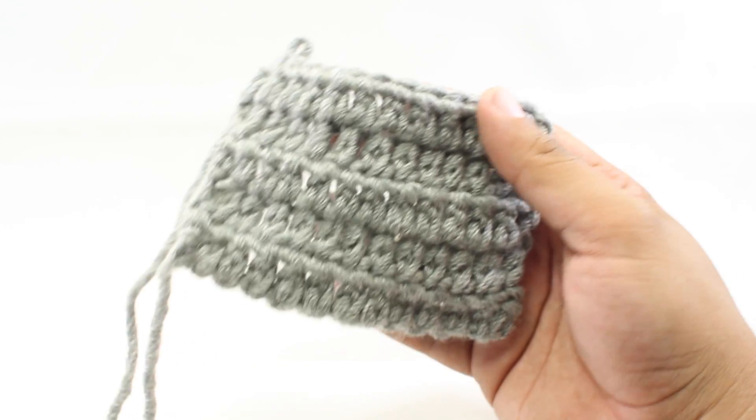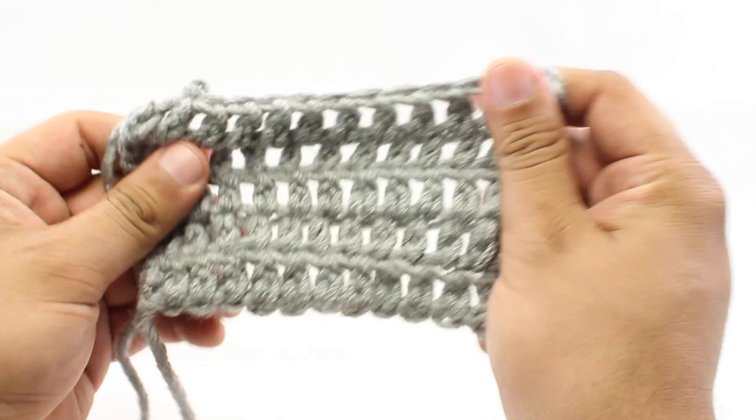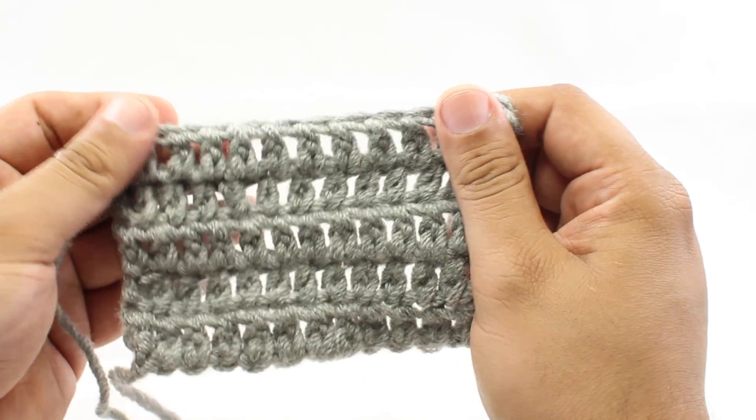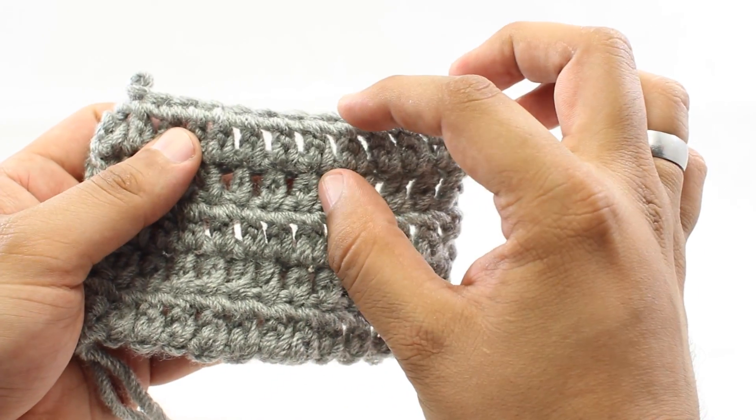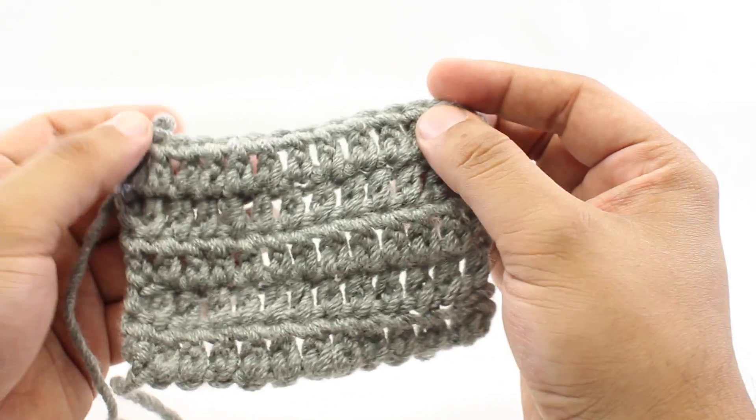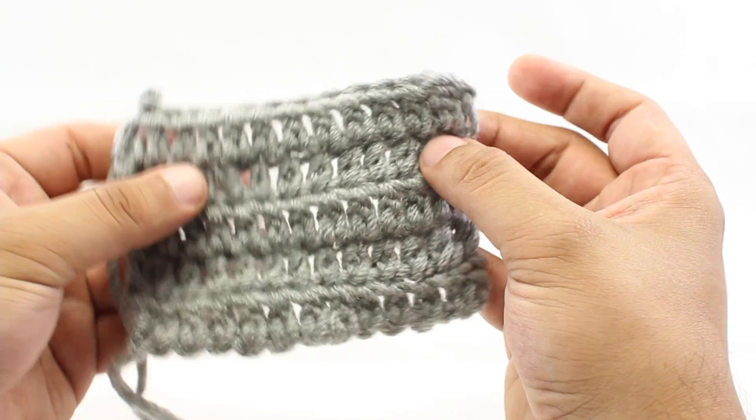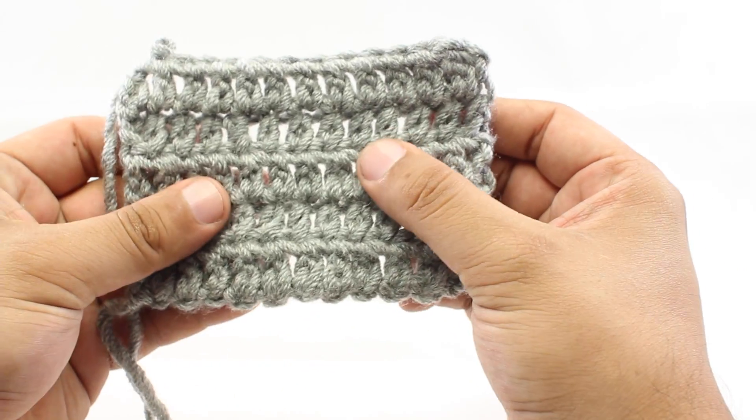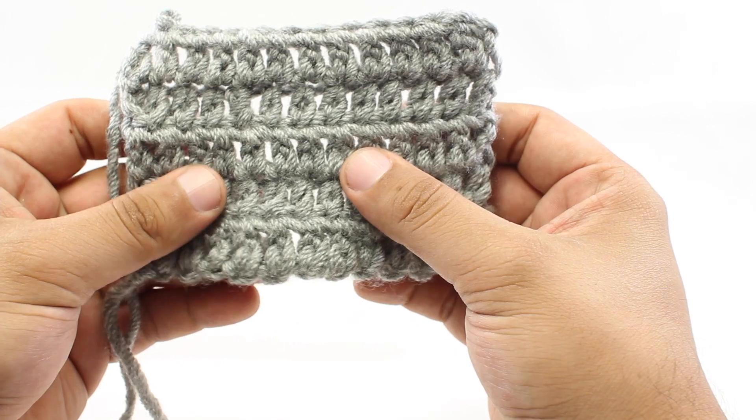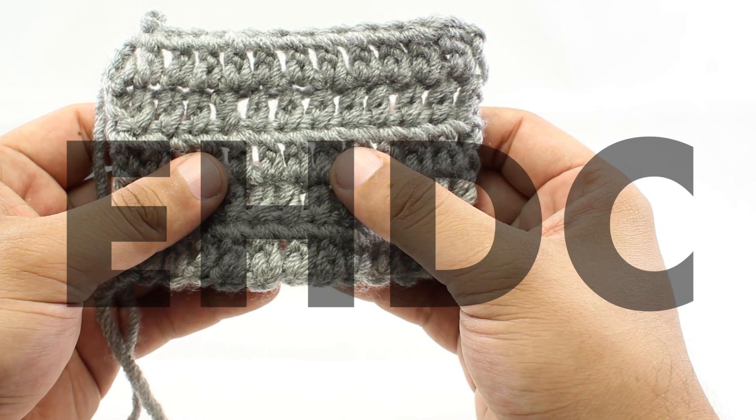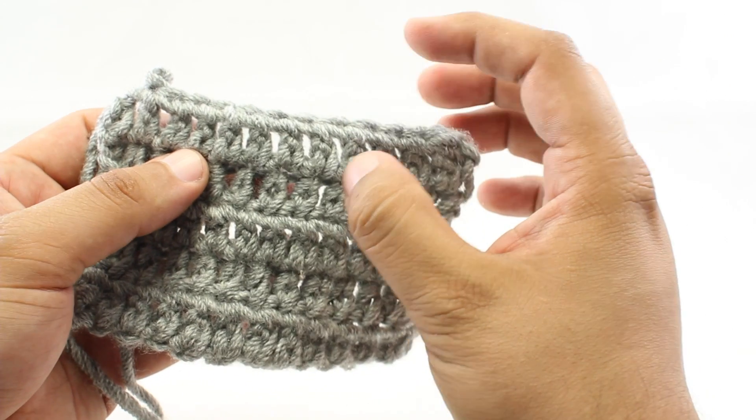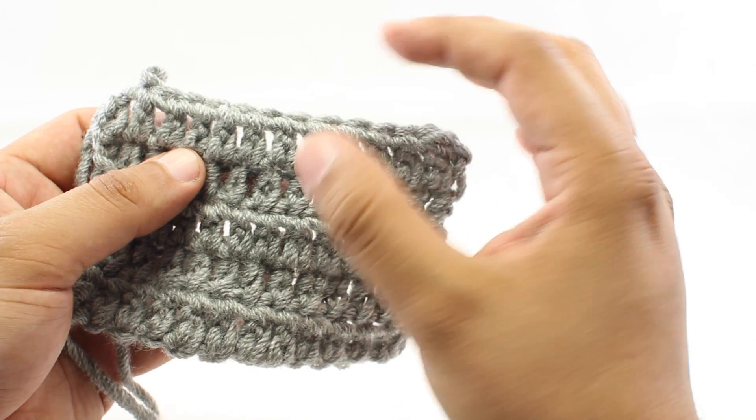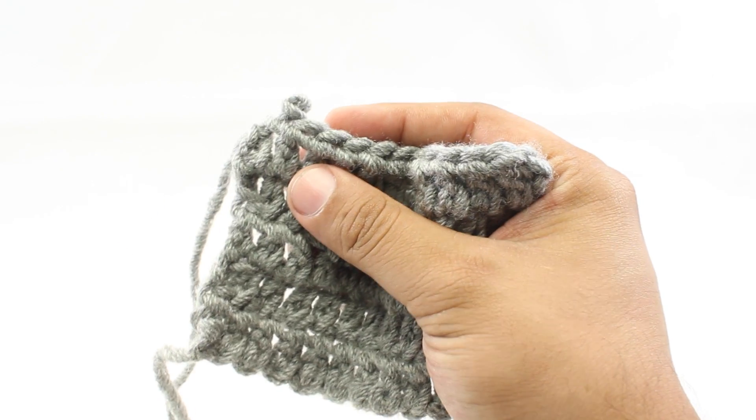The Extended Half-Double Crochet is a variation of the traditional half-double crochet and creates a slightly taller stitch. It's not used very often in crochet patterns, but if you do see it, it will be abbreviated EHDC. It's going to give you something that's sort of right in between a half-double crochet and a double crochet. So let me show you how we do this.